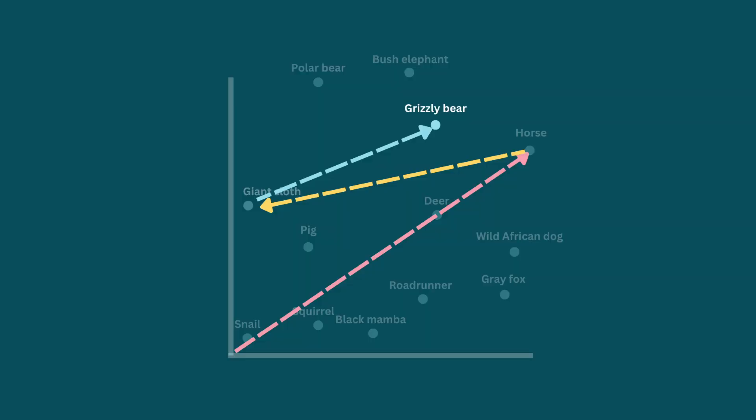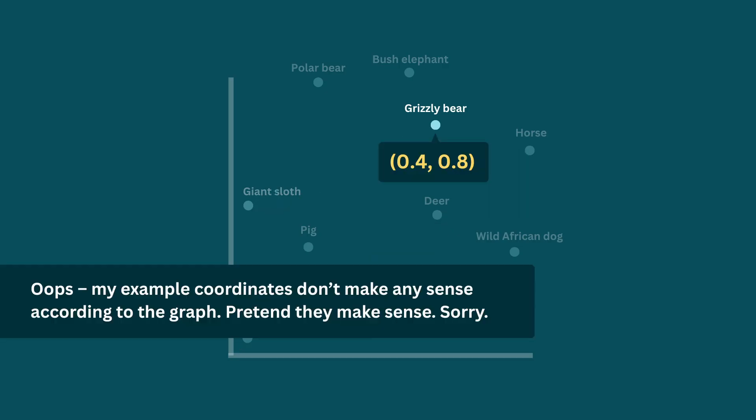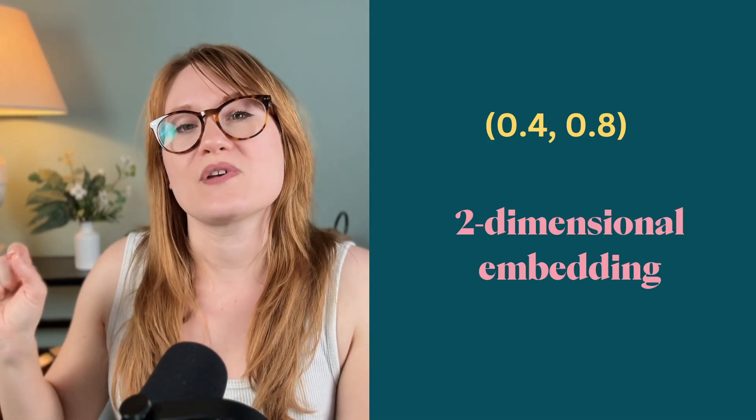Now these animals, you could say, live at specific coordinates. And so if we were to assume that the X and Y axes are speed and weight, our bear might live at something like 0.4, 0.8. Speed and weight are features of any given animal — but in machine learning, features have another name: they're called dimensions. That's why these coordinates that represent these animals we would call a two-dimensional embedding. Dimensions are really just like little dials you can fiddle with that represent data. And typically embeddings have a lot more than two dimensions, often hundreds.